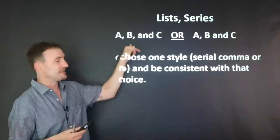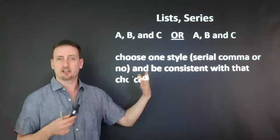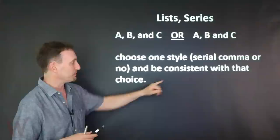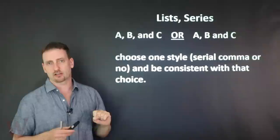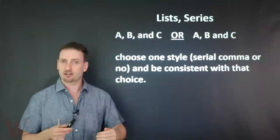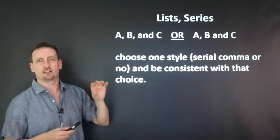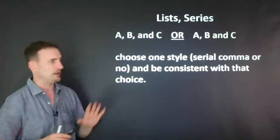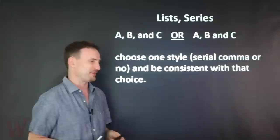Should you use one or the other? The serial comma is more common in North American writing; the non-serial comma is more common in British writing. You can use either one. The key — and this is the most important point — be consistent. If you start your essay with the serial comma and have a list, make sure you continue to use the serial comma throughout. Don't mix them. Choose one and stick with it all the way through.